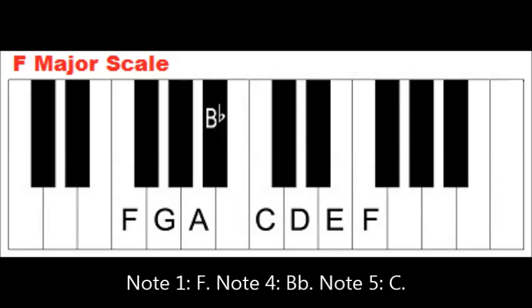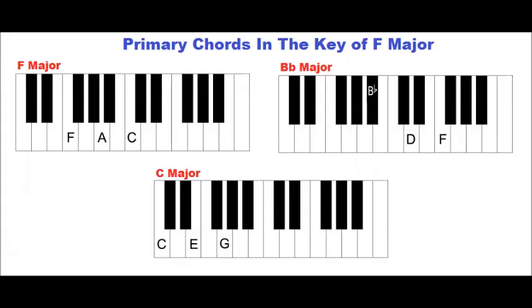Notes 1, 4, and 5 are F, B-flat, and C. Therefore, the primary chords in the key of F major are F major, B-flat major, and C major.